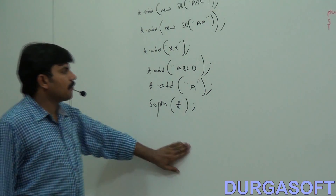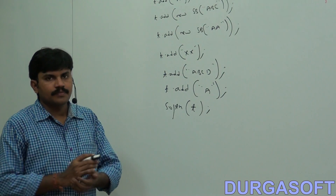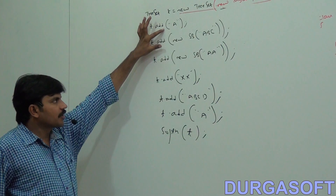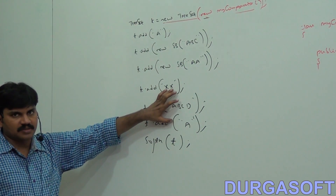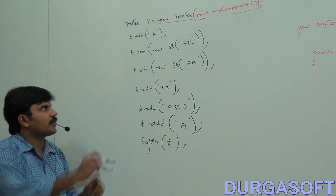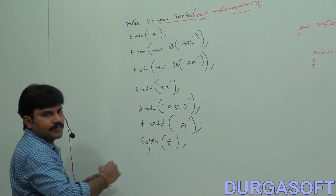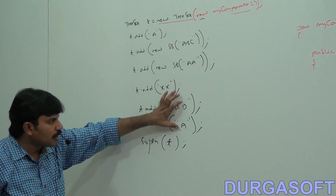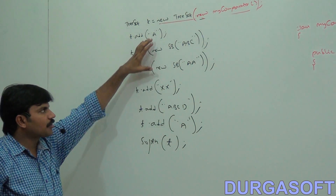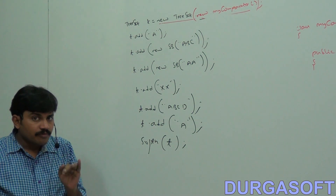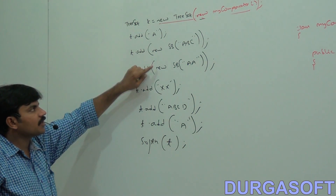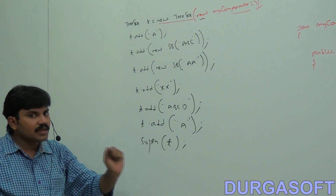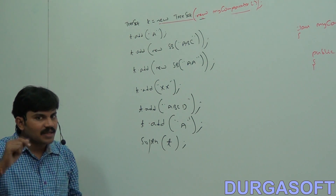I will explain one more example on the comparator. I want to add String and StringBuffer objects into the TreeSet. I am adding: T.add of String A, StringBuffer ABC, StringBuffer AA, and some more String objects. The sorting order is increasing length order.